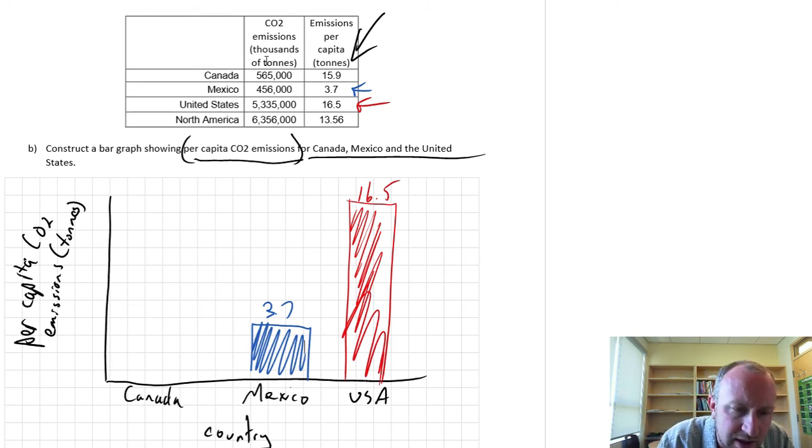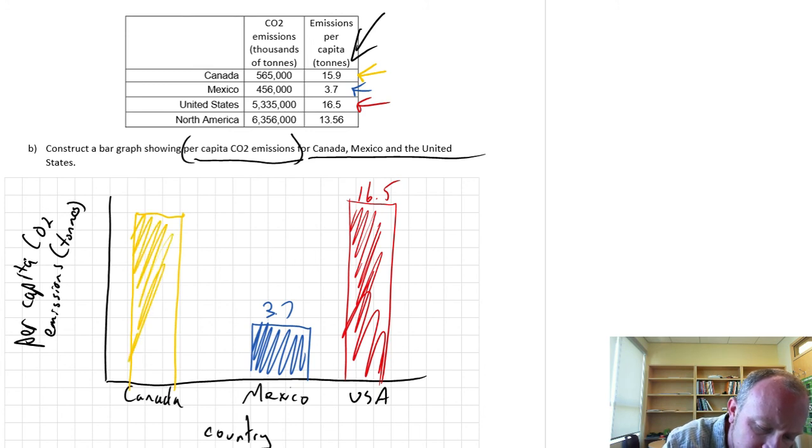Now if we look at Canada, well now this is quite a different story. Canada is 15.9, so it's not quite as much as the US, but it's pretty darn close now. It's 15.9.